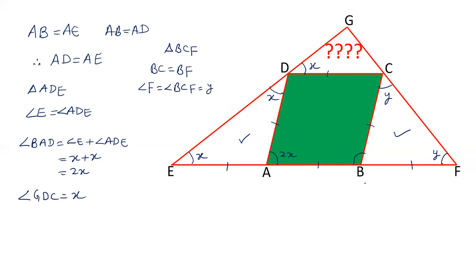And this angle ABC is exterior to triangle BCF, and therefore it is the sum of these two. Angle ABC equals angle F plus angle BCF, that is Y plus Y equals 2Y.